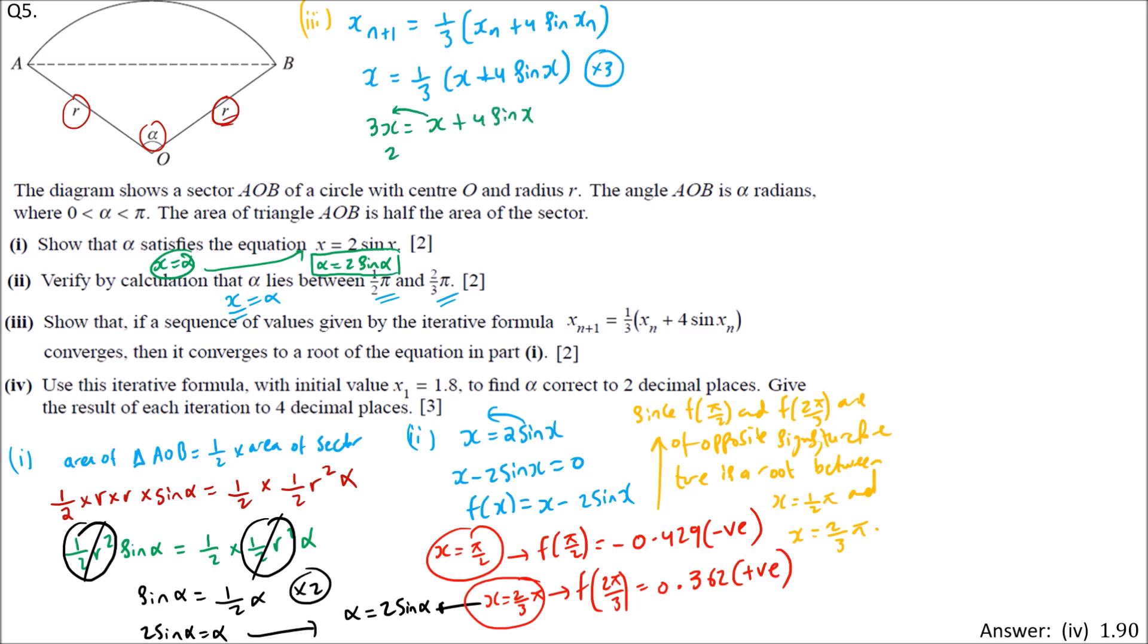If we multiply by 3, we have 3x equals x plus 4 sin x. Bring x to the left: 3x minus x gives 2x equals 4 sin x. Divide by 2: we have x equals 2 sin x. That's what we need to show for the third part.